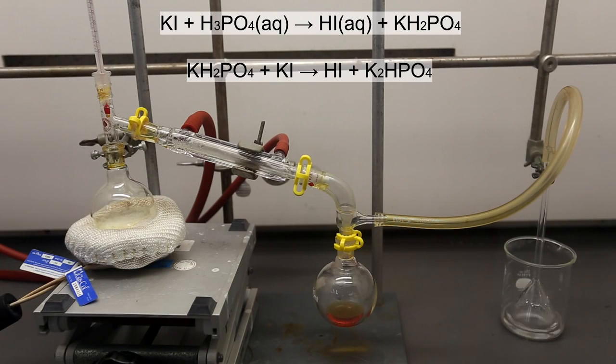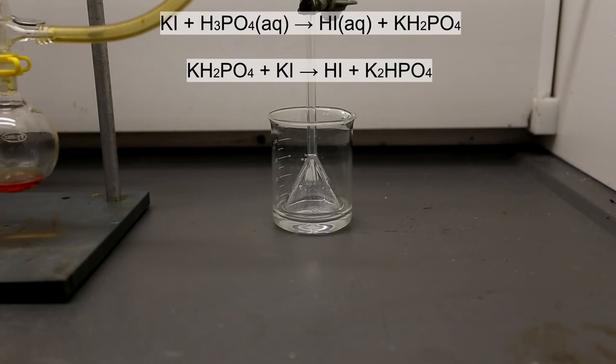At higher temperatures, when the water is being boiled off, the monopotassium phosphate can react with the potassium iodide to produce gaseous hydriodic acid and dipotassium phosphate. Be aware, however, that these reactions are only speculation.